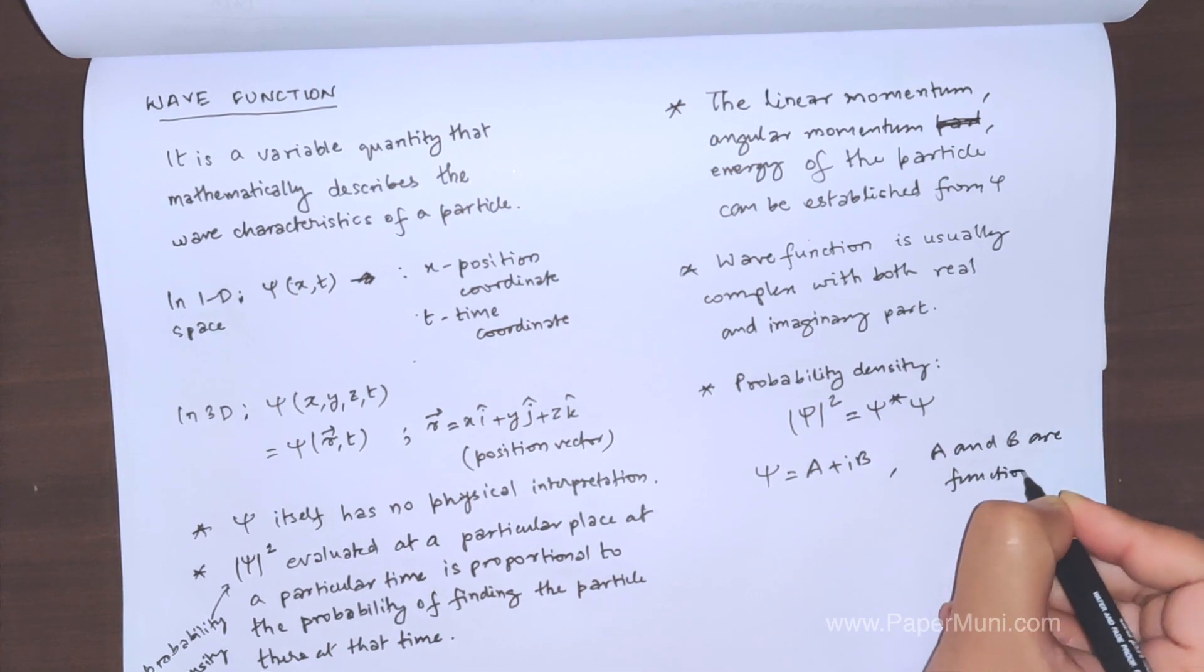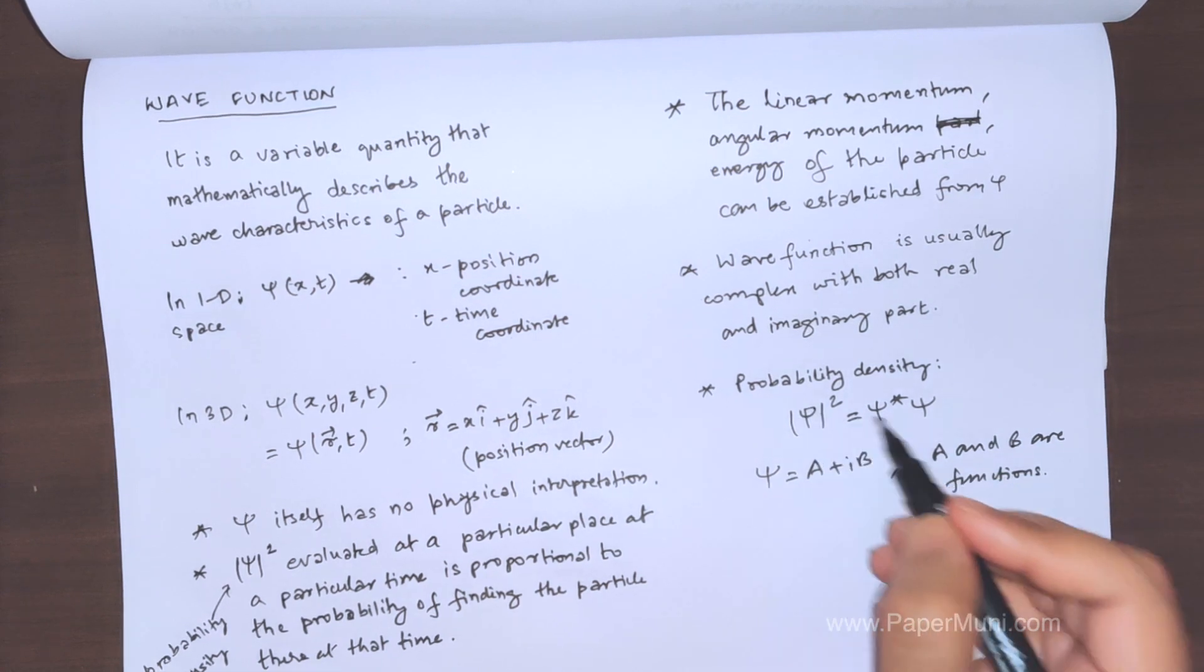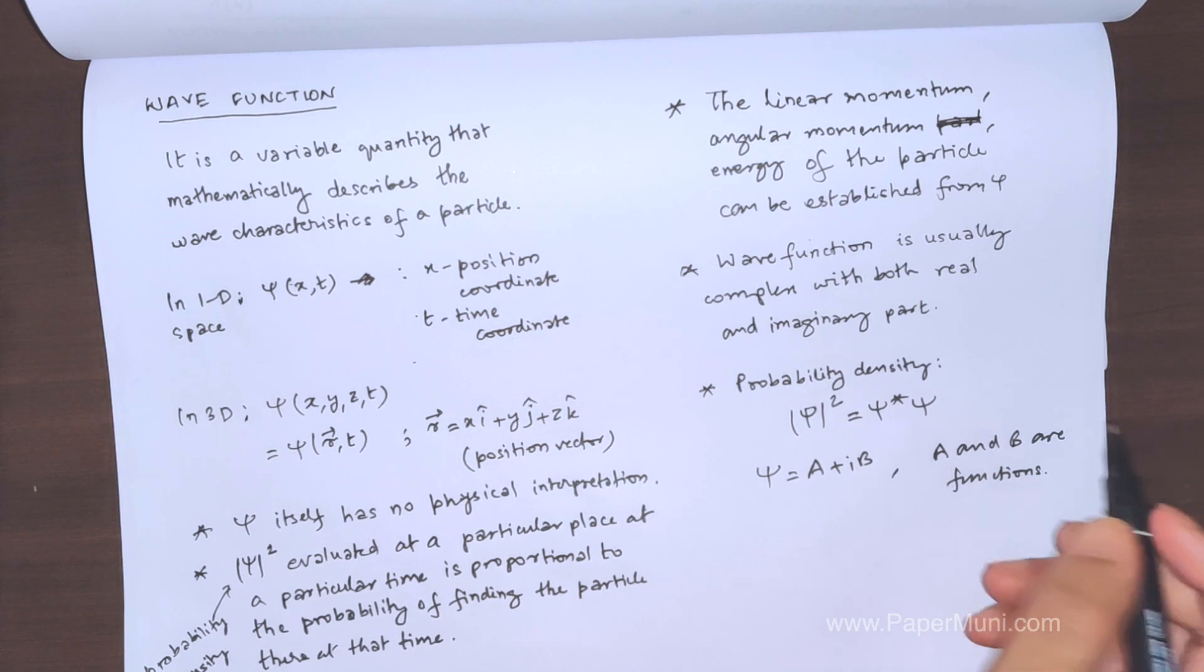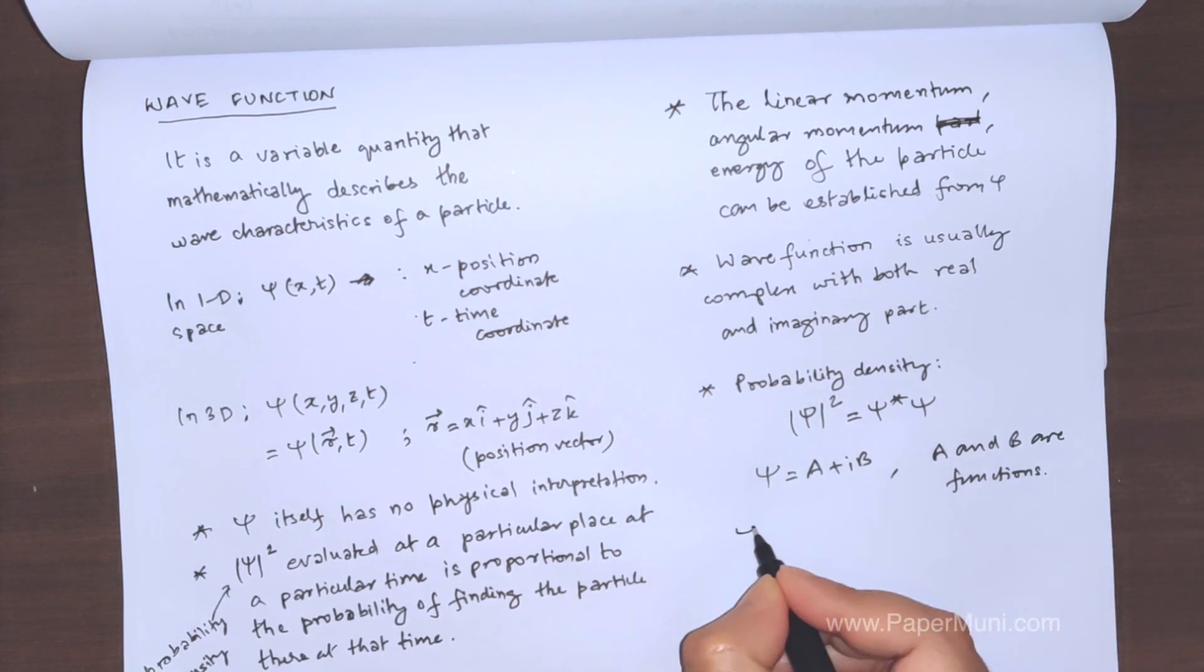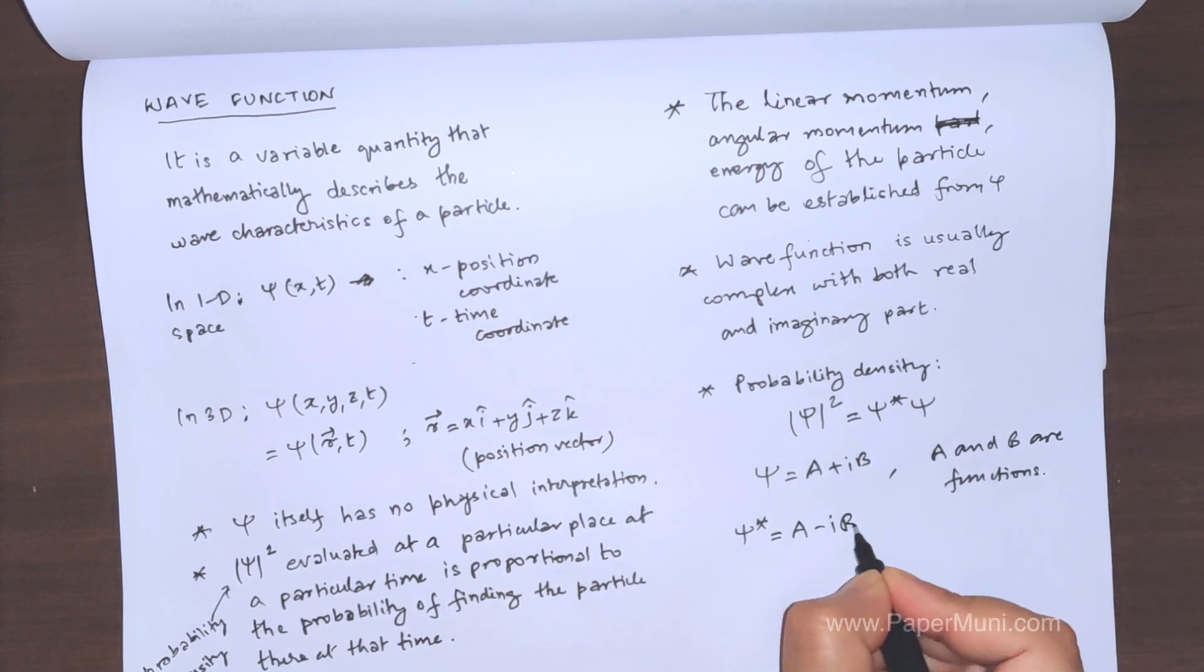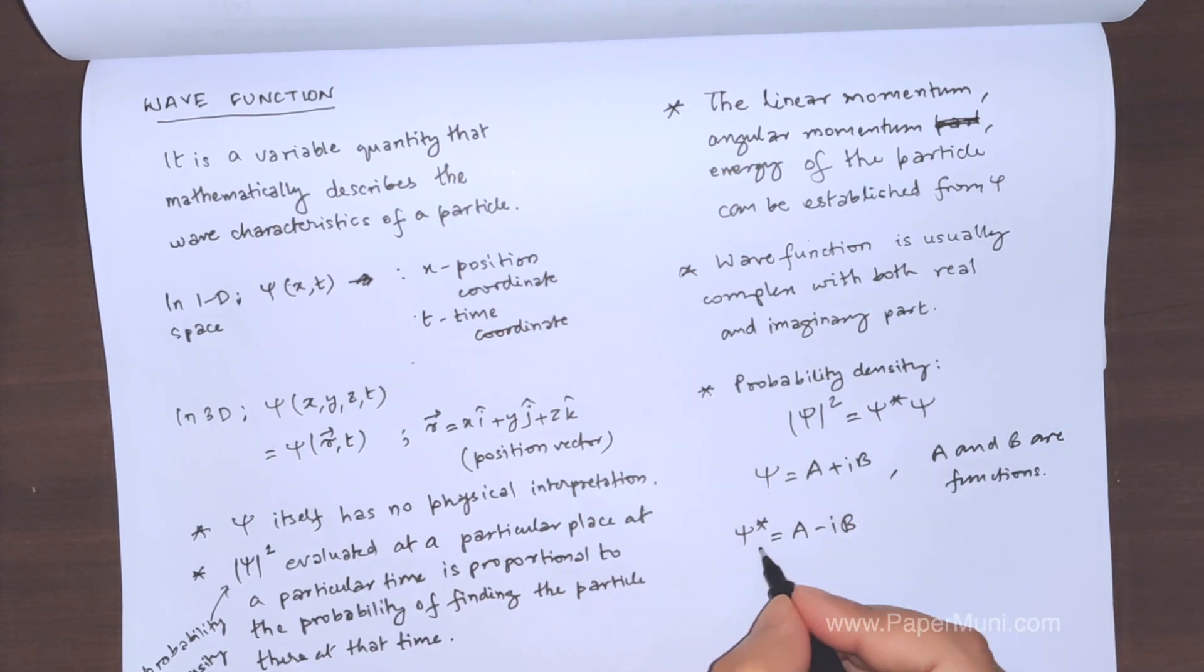Now we know that the probability density are real quantities, because probability is a real quantity, a real number which lies between 0 and 1. Now the probability density should also have the same thing. So if you have psi star, this is the complex conjugate. We will replace plus iota by minus iota. This is a complex conjugate. Whenever we mark a star, this is known as complex conjugate.